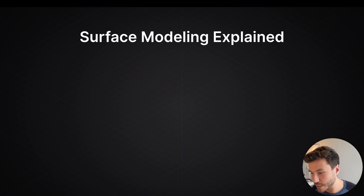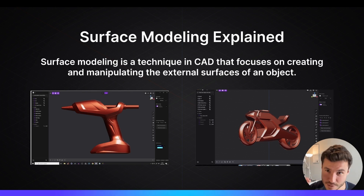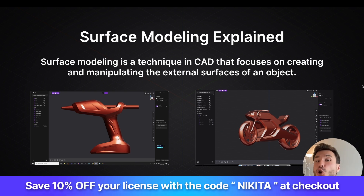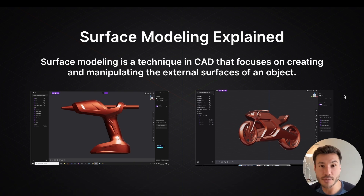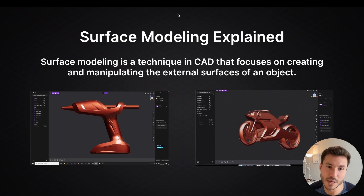So just very quickly, what is surface modeling? Surface modeling is a technique in CAD — a subform that focuses on creating and manipulating the external surfaces of an object. This is the most important thing to understand: surface modeling is only about the external surfaces most of the time.